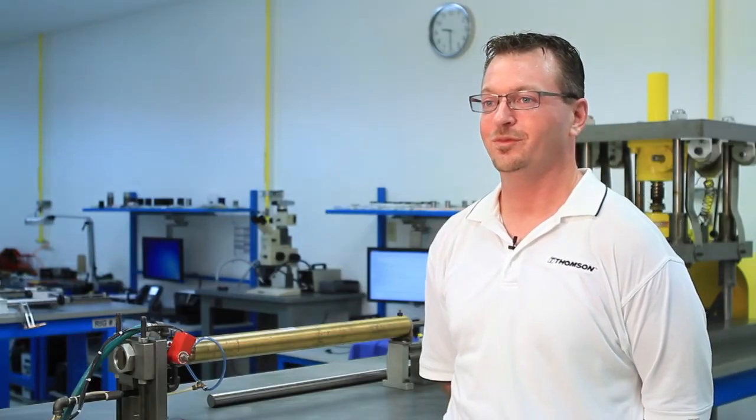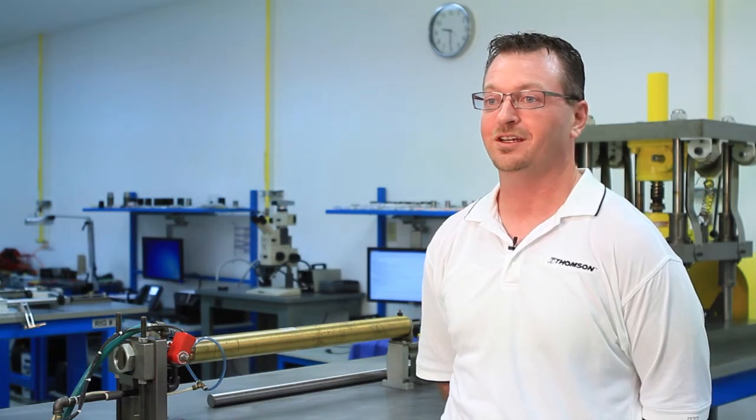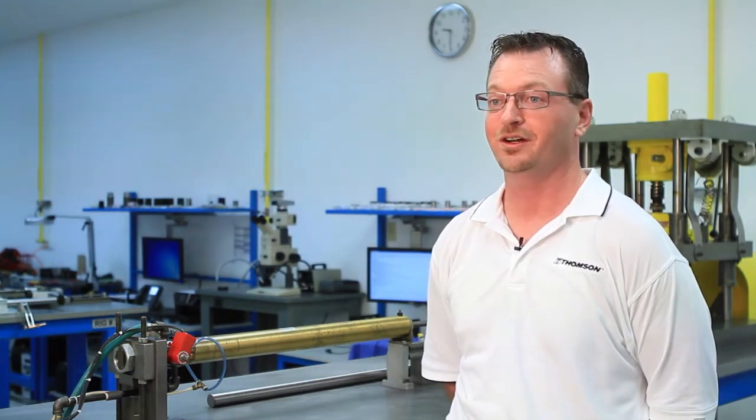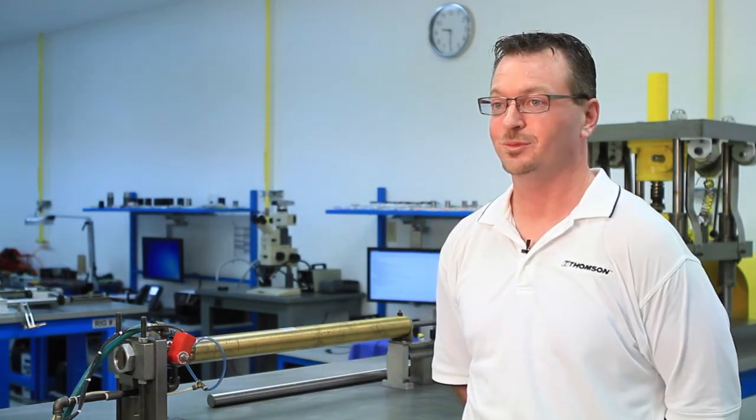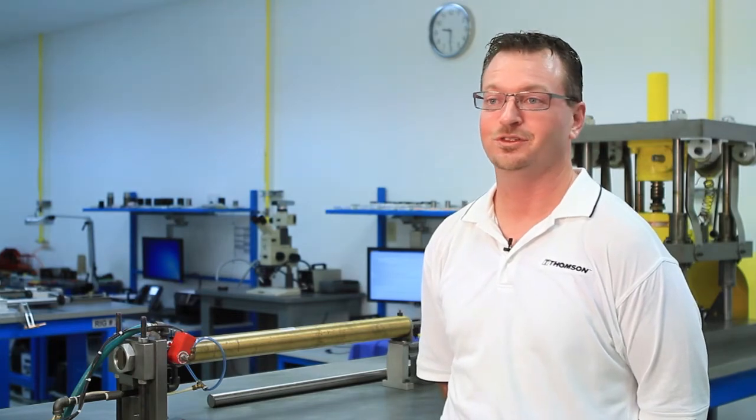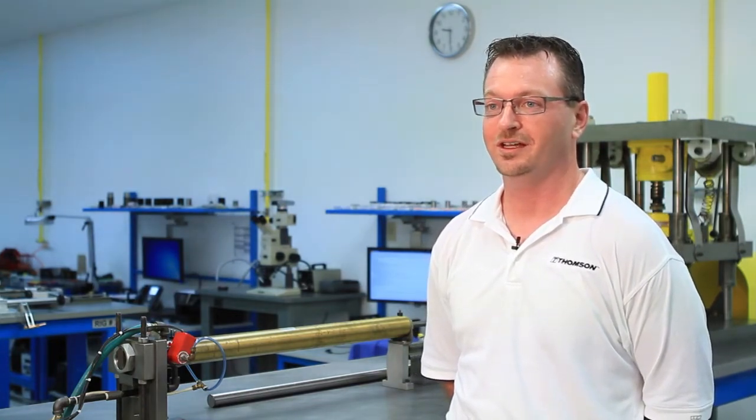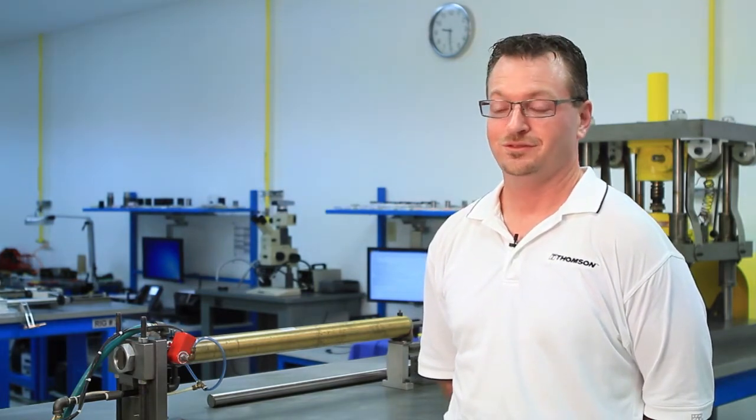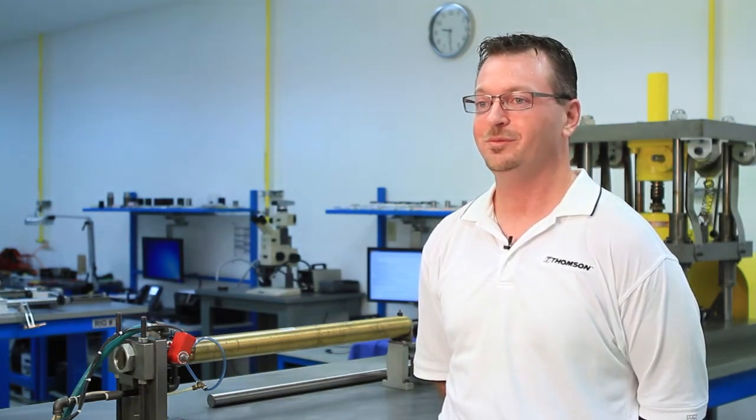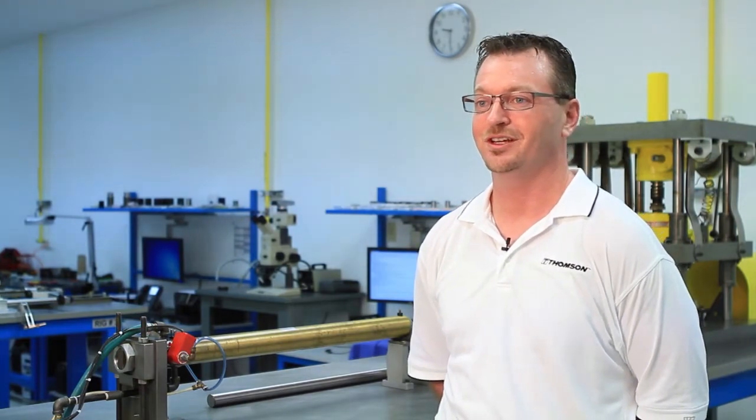Unscheduled downtime for your assembly line can cost up to $10,000 an hour, which is a very reasonable assumption to make. So when you have the ability to shut the line down and check your linear bearings, it's definitely recommended because the linear bearings can help prevent that unscheduled downtime.